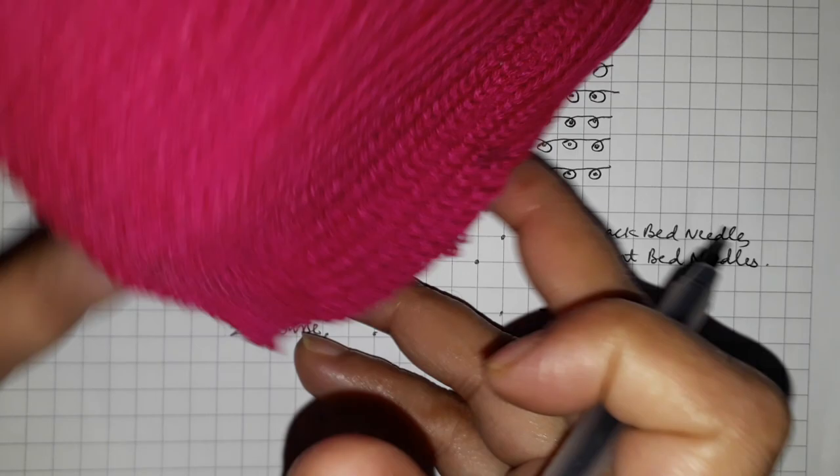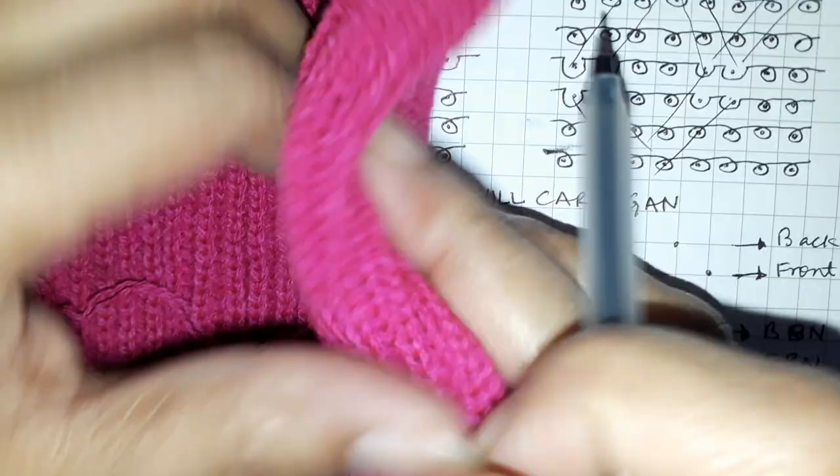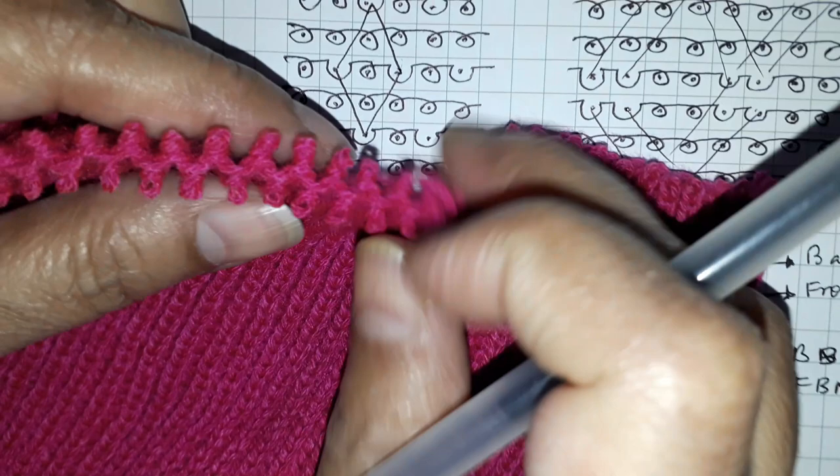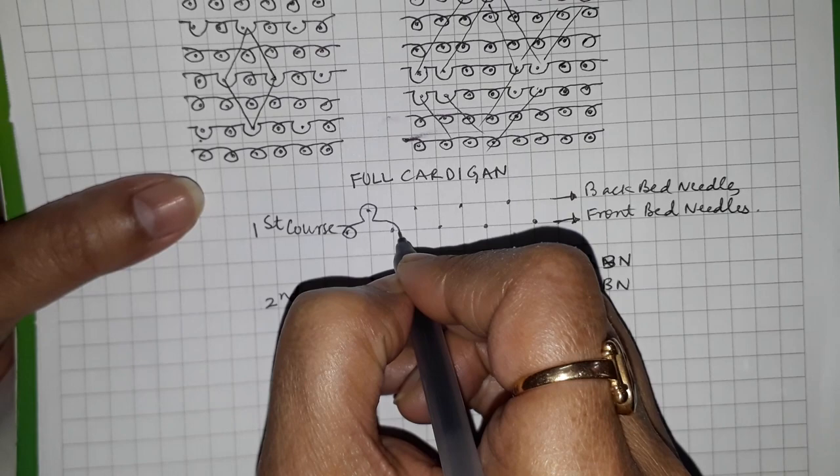This is a full cardigan which I'd shown you in my other video. It's got all knit stitches, v's on this side, v's on the other side, and if you look at this it's got a tuck stitch here. Let's see what is the pattern of knit and tuck stitches. In the first course you have the front bed needles you knit and on the back bed needles you tuck.